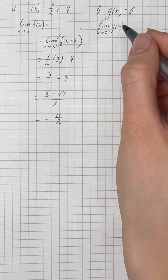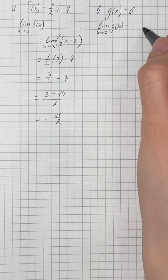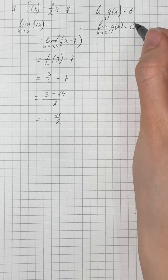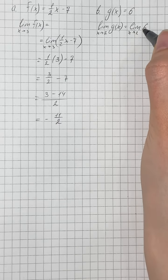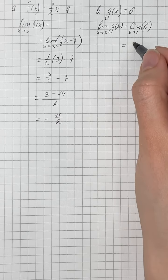Now we're going to do the same with the second limit. We need to find limit as x approaches 2 of g of x equals 6. Therefore that's going to be just 6.